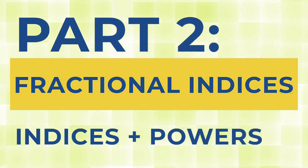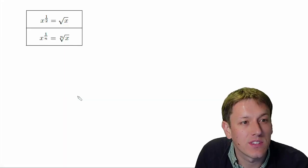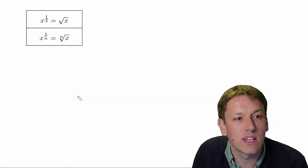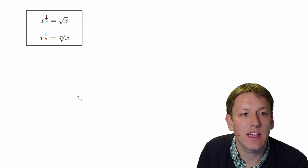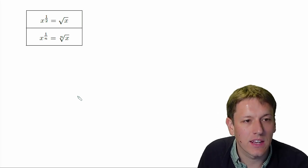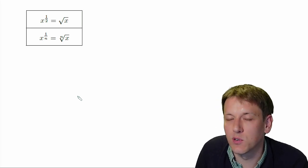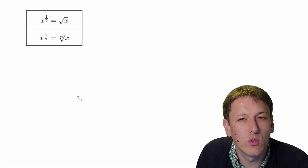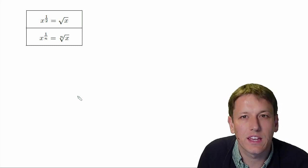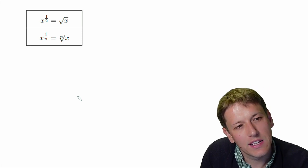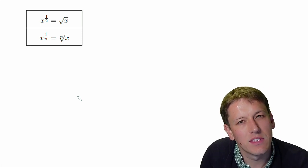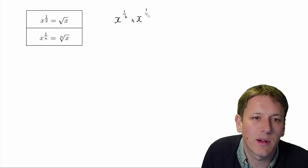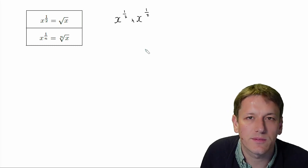The next rules we want to look at are: X to the half is the square root of X, and in general X to the 1 over N is the Nth root of X. Again, you might have come across these before, but we don't always think carefully about why they're true. So why would X to the half be the square root of X? Well, just imagine taking X to the half and multiplying it by itself.